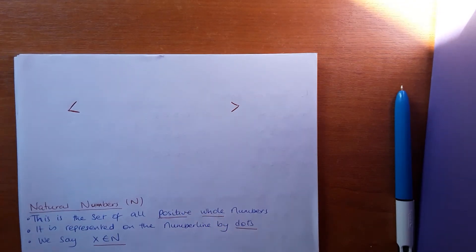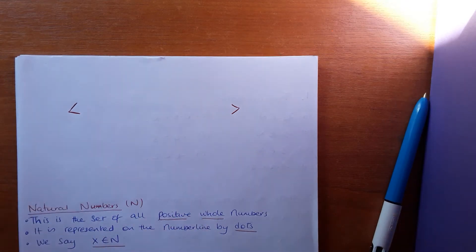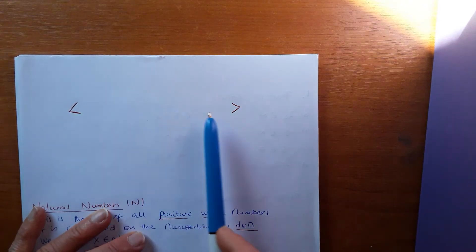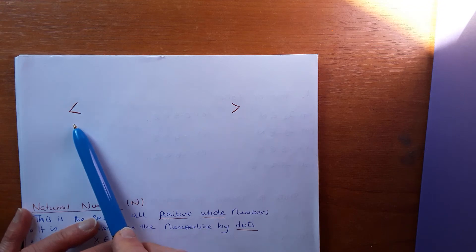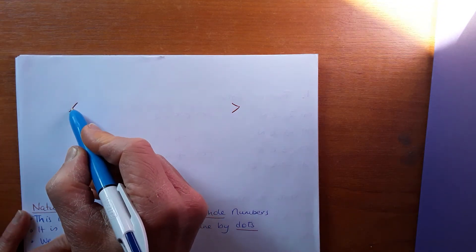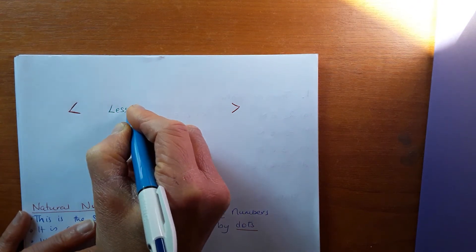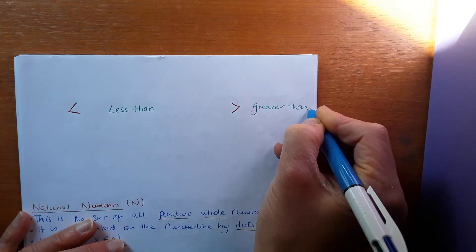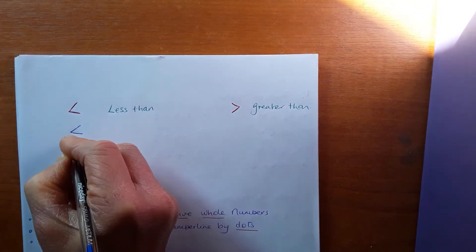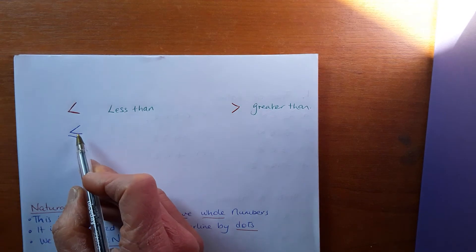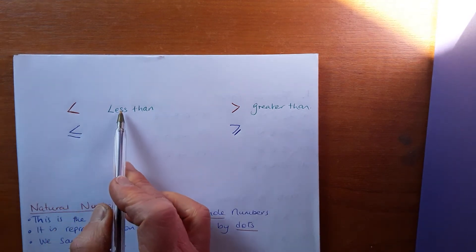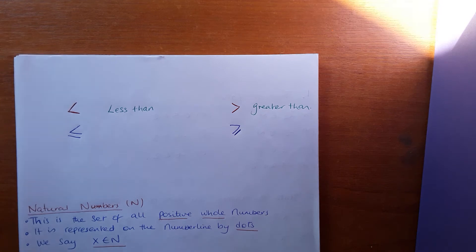I'm going to start explaining inequalities. You may not have come across this in first year but you would have touched it in sixth class. This symbol is less than. The way to remember less than and greater than is: less than looks like a slanted L. So the slanted L is less than. The opposite one is greater than. Less than or equal to means it's either less than something or equal to it. Same with greater than or equal to.